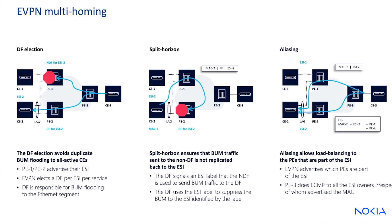In all-active scenarios, we have some required procedures for loop avoidance. Designated forwarders are responsible for this, and it could be compared in function to the concept of a root bridge in spanning tree. The DF election helps us avoid duplicate BUM flooding in all-active CE scenarios, because the DF is the one responsible for BUM flooding into the Ethernet segment. Split horizon ensures that broadcast traffic sent to the non-DF is not replicated back onto the Ethernet segment. Aliasing allows load balancing to the PEs that are part of the ESI, providing per-service load balancing in single active and all-active scenarios.